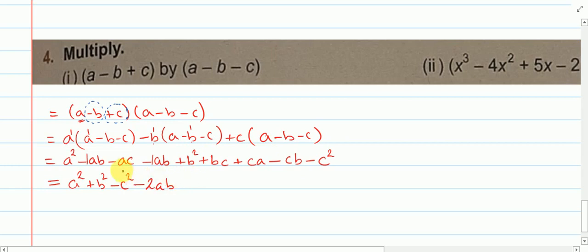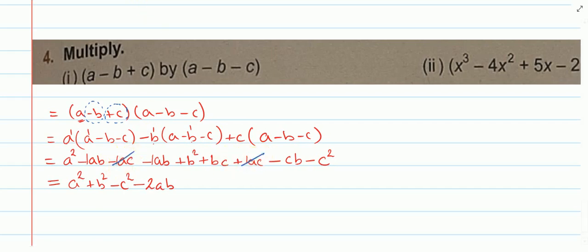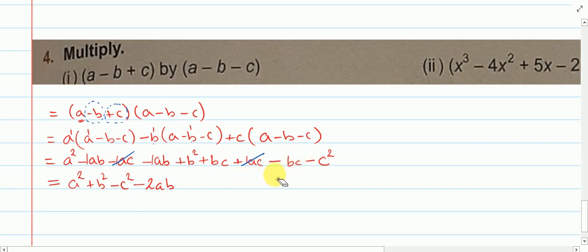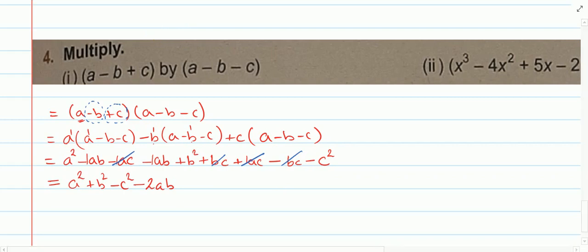Here we have minus ac and plus ca — ca can be written as ac — so the terms are exactly the same but sign opposite, and they cancel. Similarly, plus bc and minus cb — cb can be written as bc — same terms, opposite sign, so they cancel too. So the final answer is a square plus b square minus c square minus 2ab.